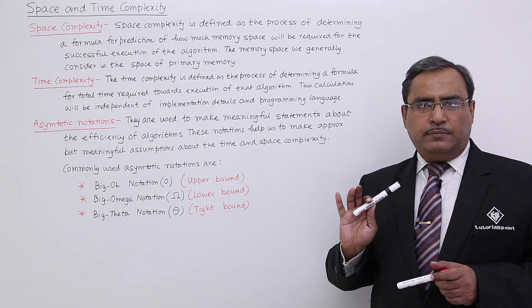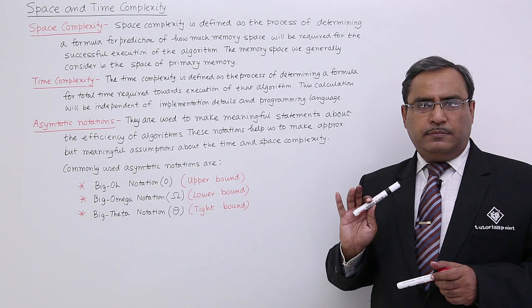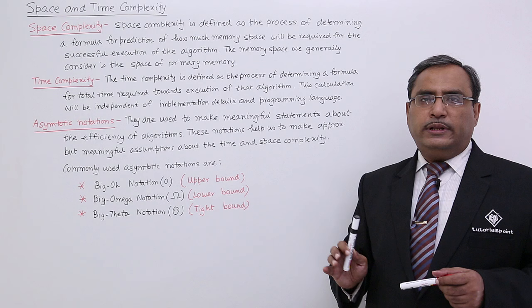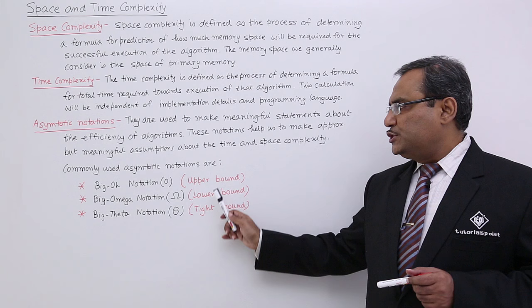Big Omega notation is the lower bound — that is the minimum time it will at least take — and that is what Omega will be denoting. The last one is the Big Theta notation, which denotes the tight bound. That means within the upper bound and lower bound, the bound will be mentioned. So that is the Big Theta notation.